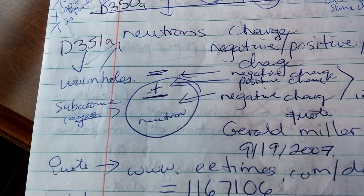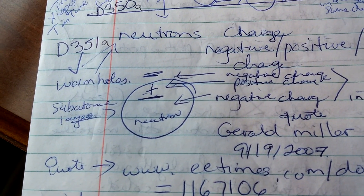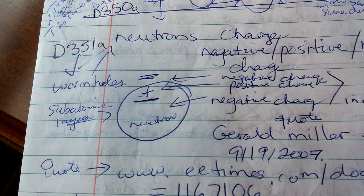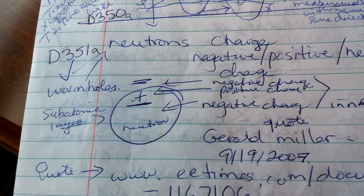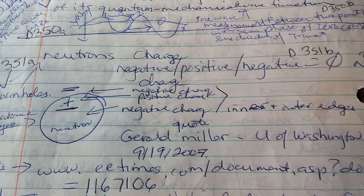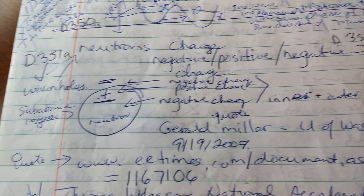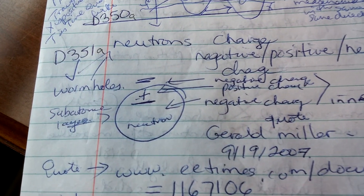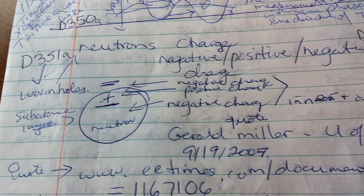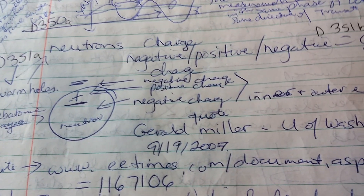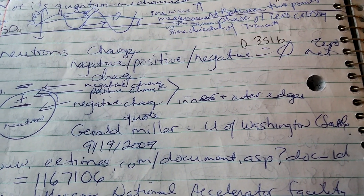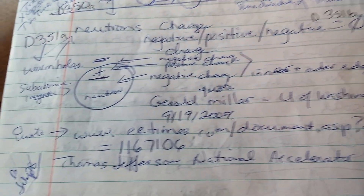And then it shows the wormholes, and you can see a negative charge at the top. Then there's a positive and negative charge inside of it, in the inner and outer edges of the wormhole, less the plasma. Then you have a subatomic layer surrounding it. And it's a quote from Gerald Miller, University of Washington, Seattle, 9-19-2007.